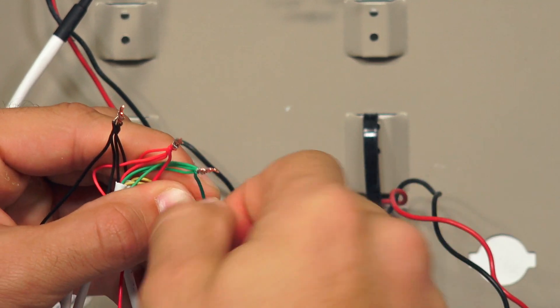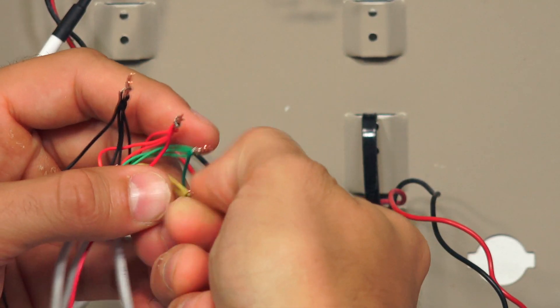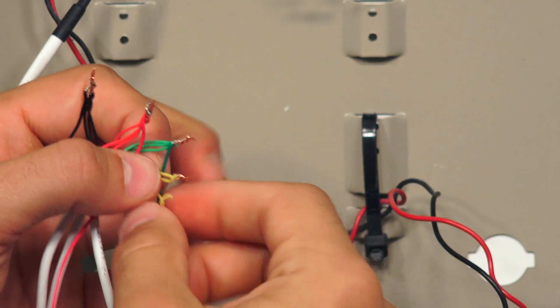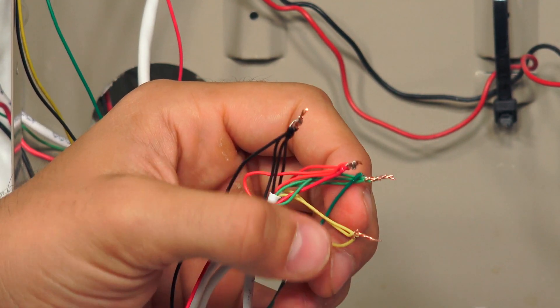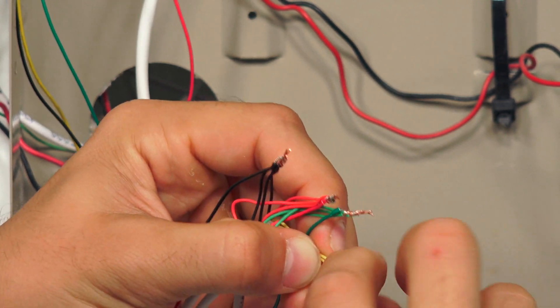And there's no rush with any of this, make sure you take your time and that your splices are good. Sometimes this will happen, where a wire may break off and you have to re-strip it. As you can see, if that happens, we just re-strip the wire, wrap it around, and it's ready to go.